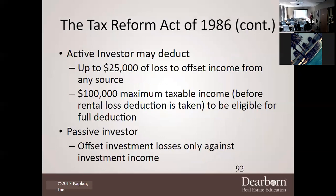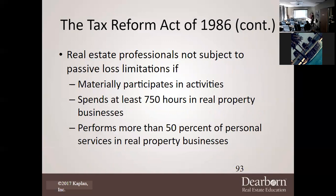An active investor may deduct up to $25,000 of loss to offset income from any source. There is a $100,000 maximum taxable income threshold before the full rental loss deduction applies. A passive investor can only offset investment losses against passive income. Real estate professionals are not subject to passive loss limitations, provided they materially participate — spending at least 750 hours in real property business and performing more than 50% of personal services in their real property business.